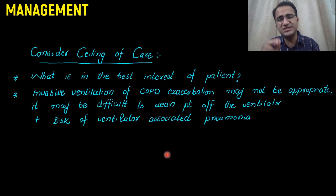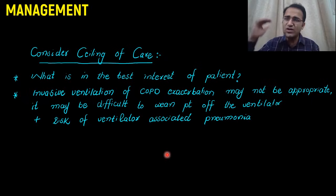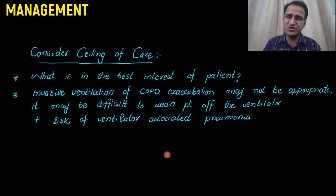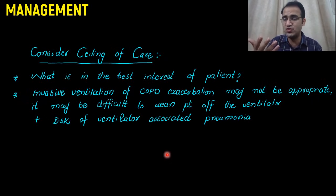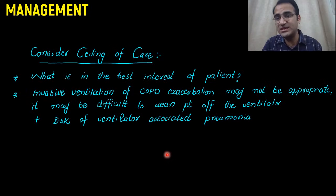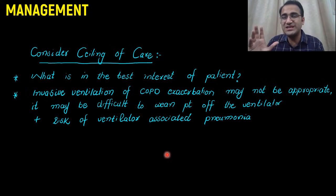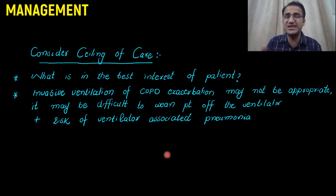You need to consider the ceiling of care for these patients — to what extent do you have to go, and what is in the best interest of the patient? Try to discuss these things before the patient gets so severe that they are not able to convey their message. Discuss whether they want to go on a ventilator or not. Mostly, patients who have gone through the ventilator experience once do not prefer it again.